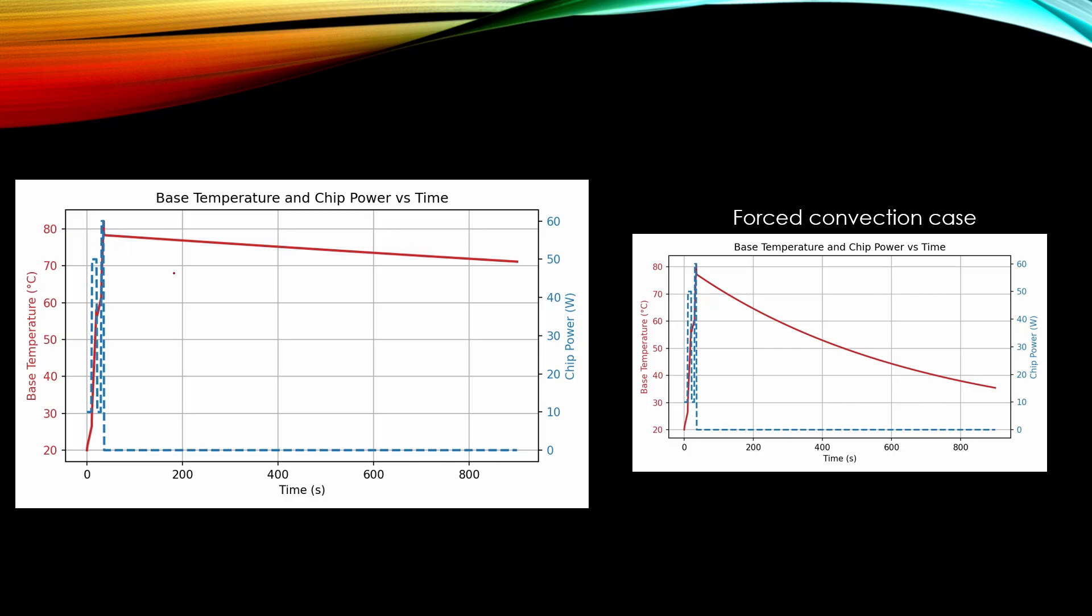So after this cooling period, 900 seconds cooling period, the temperature is around 71-72 degrees C. And this is a big difference if we compare to this forced convection case. Then this temperature was decreasing down to around 35 degrees C.